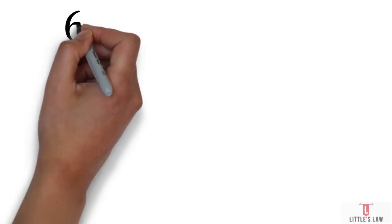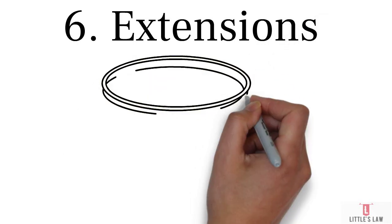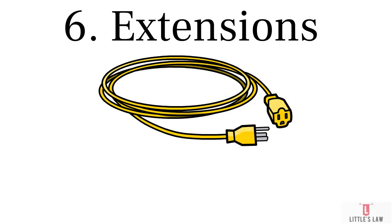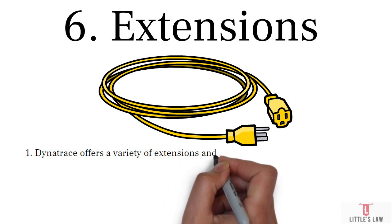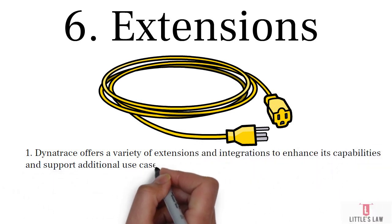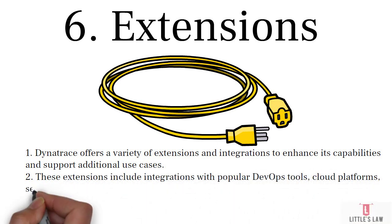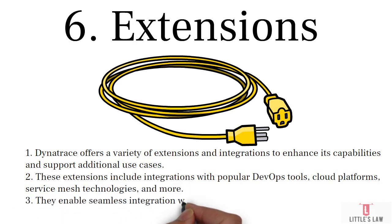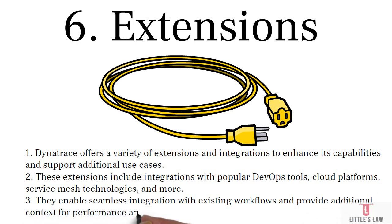The sixth component is Extensions. Dynatrace offers a variety of extensions and integrations to enhance its capabilities and support additional use cases, including integrations with popular DevOps tools, cloud platforms, and service mesh technologies. For example, Dynatrace integrates with Jenkins and Kubernetes to streamline development and deployment processes. The Kubernetes integration allows you to monitor the health and performance of containerized microservices, while the Jenkins integration enables incorporating performance testing into your CI/CD pipeline to ensure code changes don't degrade application performance.